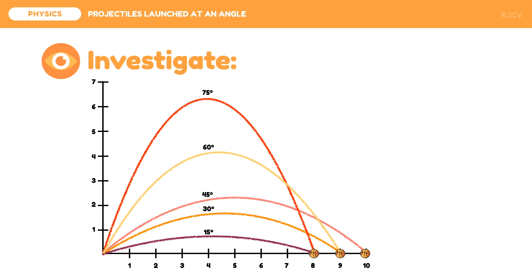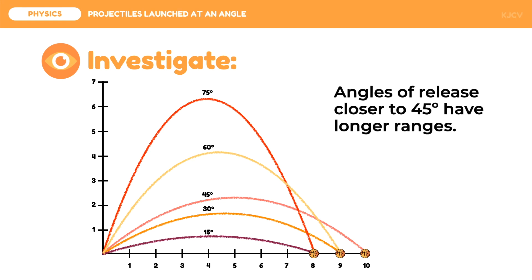In this case, it is not right to conclude that there is a direct or inverse relationship between the angle of release and range. Rather, angles of release closer to 45 degrees have longer ranges. Since 60 degrees and 30 degrees are closer to 45 degrees, these angles would result in longer ranges compared to that of 75 degrees and 15 degrees.